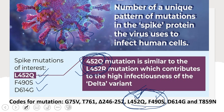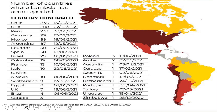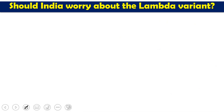Lambda has now been detected in a total of 29 different countries, along with recorded dates of first detection in each. These countries include Peru, Chile, Argentina, Ecuador, and many others across South America and beyond.